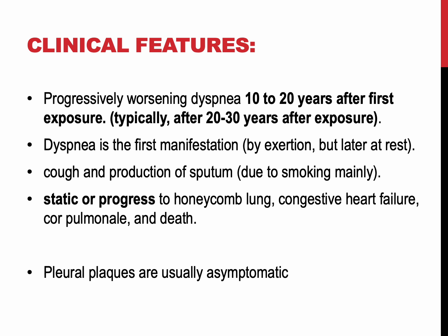The clinical findings in asbestosis are similar to those of other chronic interstitial lung diseases. Progressively worsening dyspnea appears 10 to 20 years after exposure, usually associated with cough and sputum production. The course is variable — it may remain static in some patients or progress to congestive heart failure, cor pulmonale, or even death. Pleural plaques are usually asymptomatic and detected on radiographs as circumscribed densities.